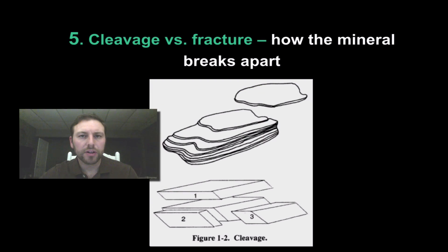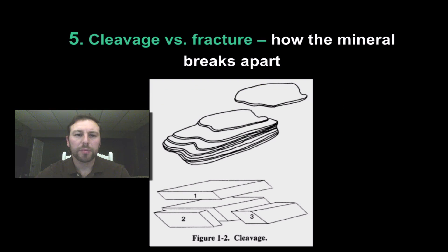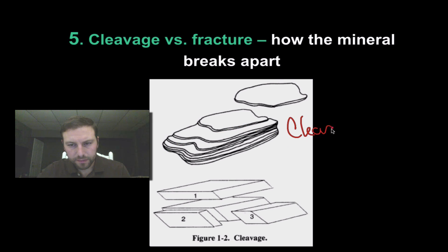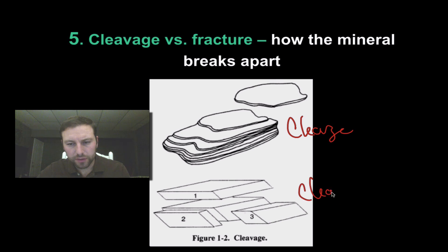Another very good characteristic we can use to identify minerals is how it breaks. We call this cleavage versus fracture. If it breaks apart in what looks like sheets of paper, it is known to have cleavage. Or if it breaks off in predetermined patterns, that is also cleavage — just a different type.